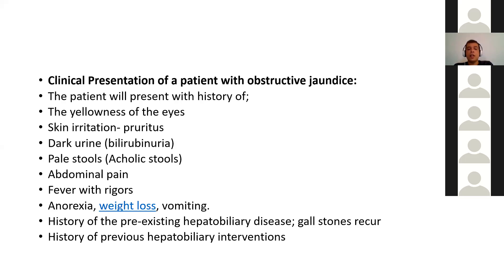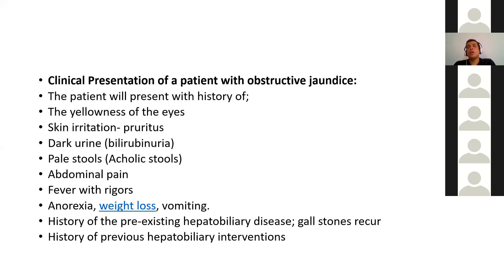Malignant jaundices are mostly painless unless they cause obstruction involving other nerve endings. There will be fever with rigors in cases of cholangitis, where bile gets infected due to obstruction. Anorexia and weight loss are common, especially in malignancy. There may be vomiting as well. It is important to ask about history of previous hepatobiliary disease, gallstones, interventions, and drugs the patient is taking.